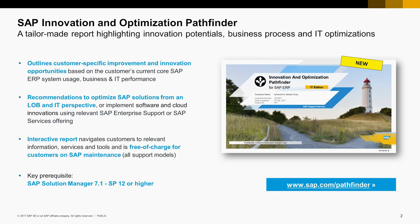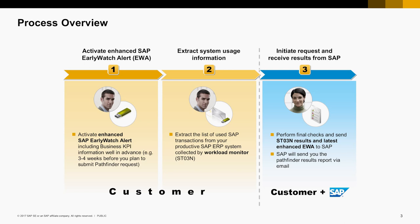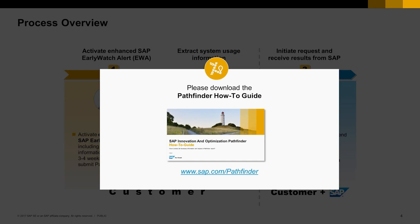You can learn more on our landing page at sap.com/pathfinder. Let's have a look at the overall process for requesting a Pathfinder report. In the first step you have to activate the Enhanced SAP Early Watch Alert, or in short Enhanced EWA. In the second step you extract the additionally needed system usage information. In the last step you go to the Pathfinder landing page and submit your request. All information from this video can be found in the Pathfinder how-to guide, which you can download from sap.com/pathfinder.